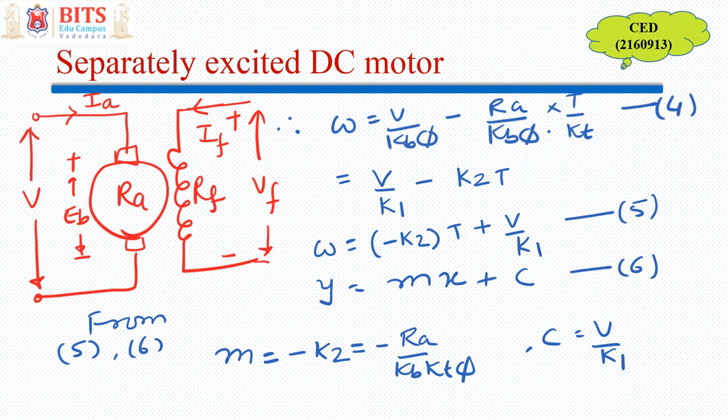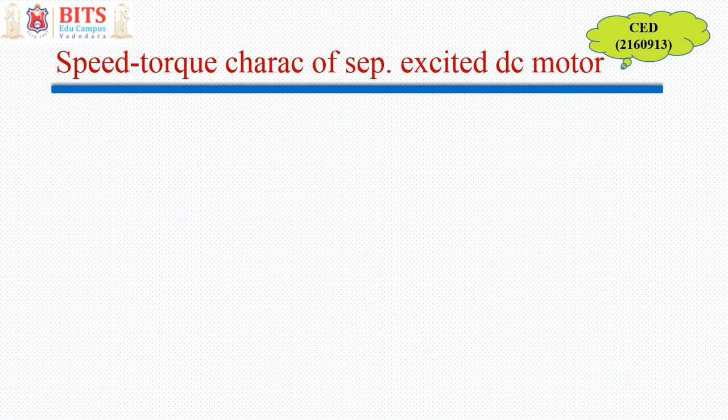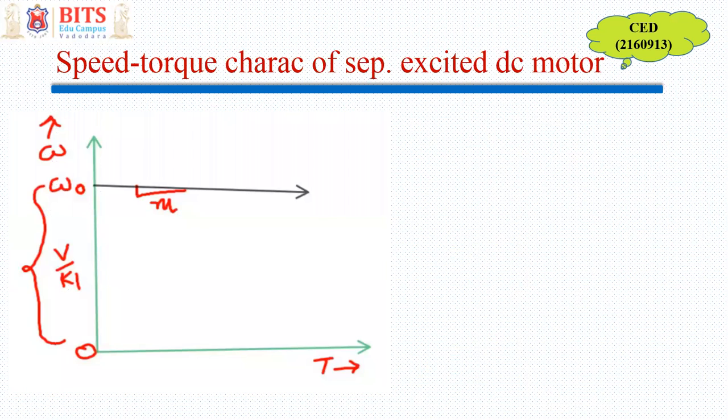Let's see how this characteristic looks in graphical form. In graphical form, this C part (V/K1) gives you the no-load speed ω0 when torque equals zero, which depends on supply voltage V. The slope M is very small, so this line is almost parallel to the X-axis or torque line.